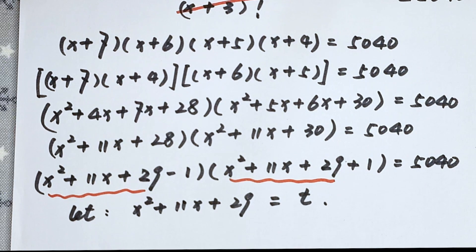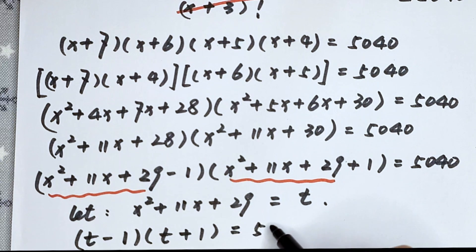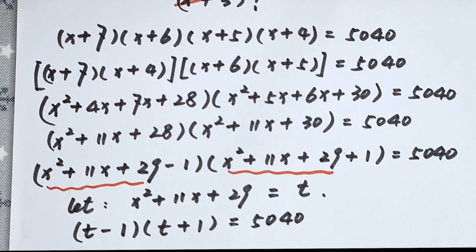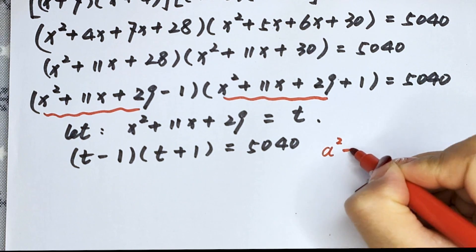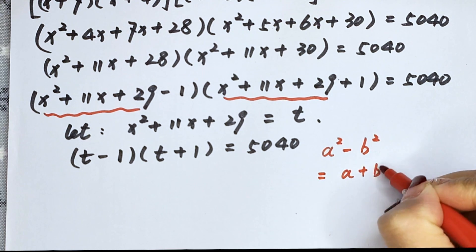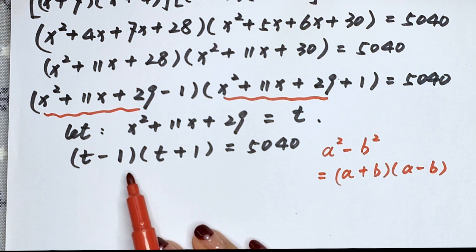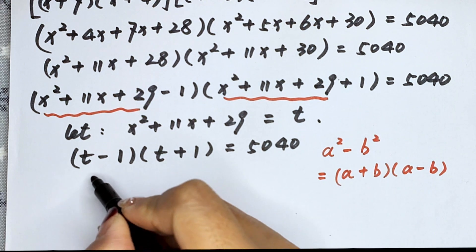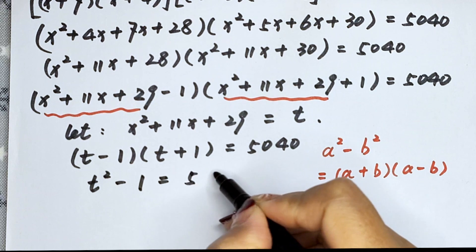Our equation can be written as (t minus 1) times (t plus 1) equals 5,040. We know that a squared minus b squared equals (a plus b)(a minus b), so this becomes t squared minus 1 equals 5,040.